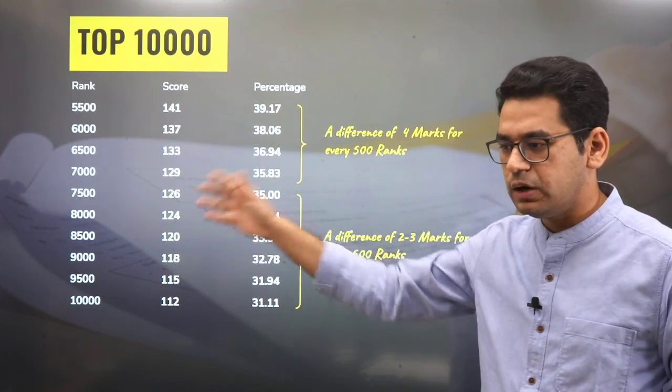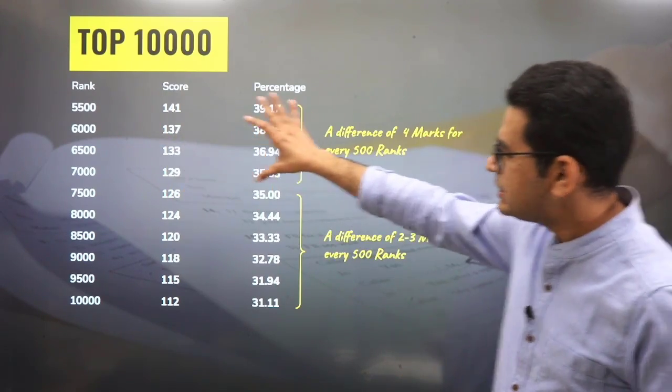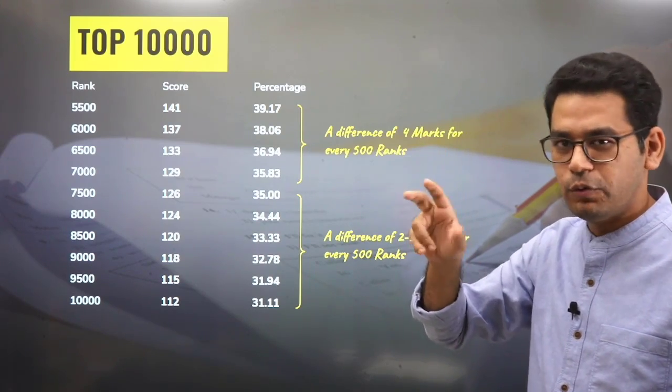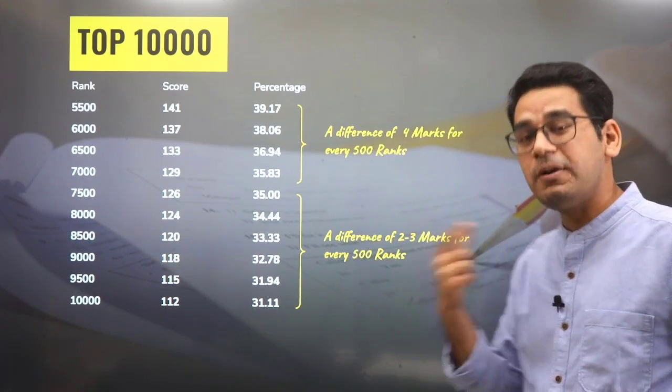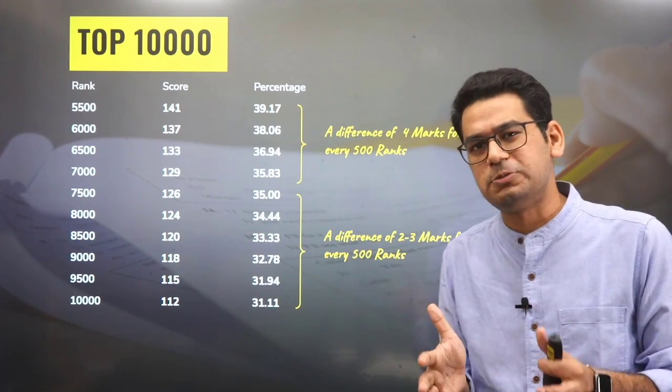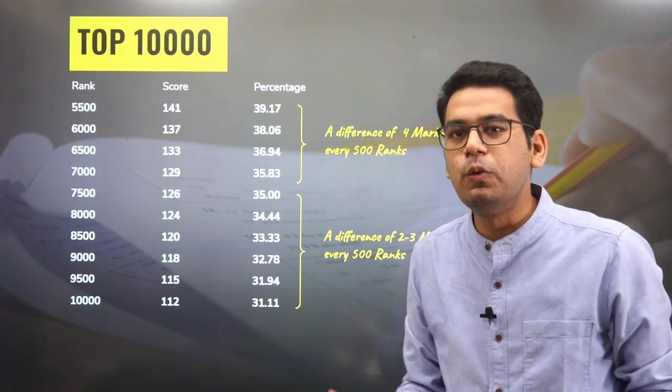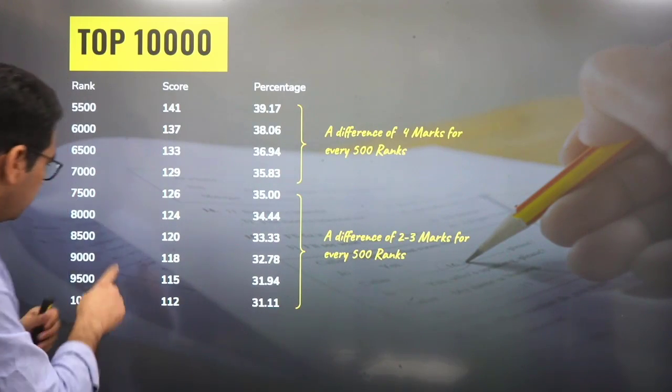And the stats for different ranks: you can see again at 7000, you still have a difference of 4 marks, 3, 4, 5 somewhere. And then suddenly after 7000, you will see 2-3 marks per 500 ranks. And that's how competitive it will become. The lower you get, the more competitive the environment becomes.